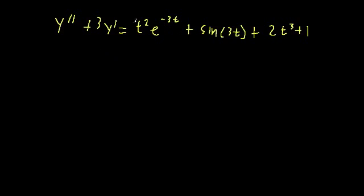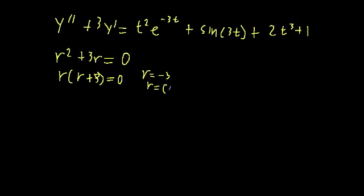But let's use our protocol and first try and solve the homogeneous part. So the characteristic equation of this will be r squared plus 3r is equal to 0. So we get that r times r plus 3 is equal to 0. So our two roots are r is equal to negative 3 and r is equal to 0.